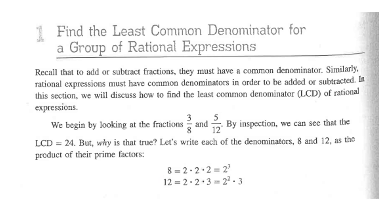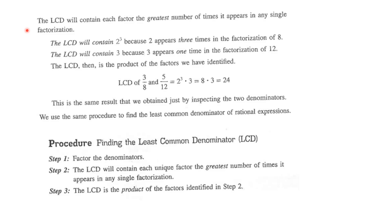And 12 is 2 times 2 times 3, or 2 squared times 3. The LCD will contain each factor the greatest number of times it appears in any single factorization. So the LCD will contain 2 cubed because 2 appears 3 times in the factorization of 8. The LCD will also contain 3 because 3 appears one time in the factorization of 12. So the LCD of 3 over 8 and 5 over 12 is 2 cubed times 3, which is 8 times 3, or 24.